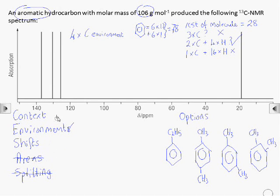And three of those are in the 120 to 140 parts per million region. So those are the aromatic carbons. We've got three carbons that are different to each other that are part of the benzene ring. And then we've got just one carbon environment which is aliphatic, not part of the benzene ring.